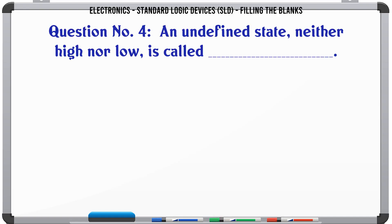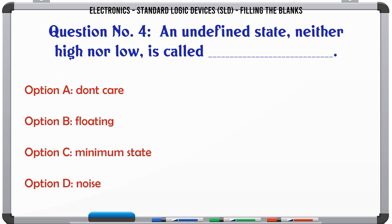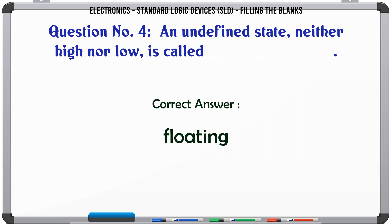An undefined state, neither high nor low, is called: A don't care, B floating, C minimum state, D noise. The correct answer is floating.